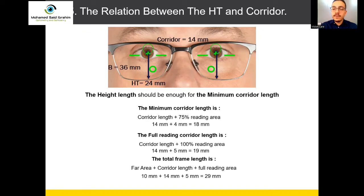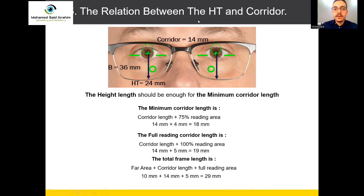For any frame with any corridor type — short, extra short, or regular — always keep this in focus: the height of the customer should be enough or bigger than the minimum corridor. It could be enough for 100% corridor or 75% corridor. Less than this distance will affect the reading area. When the customer looks down for reading, he can see the reading with 75% of the addition power at the 75% level, and 100% power at the full reading level.